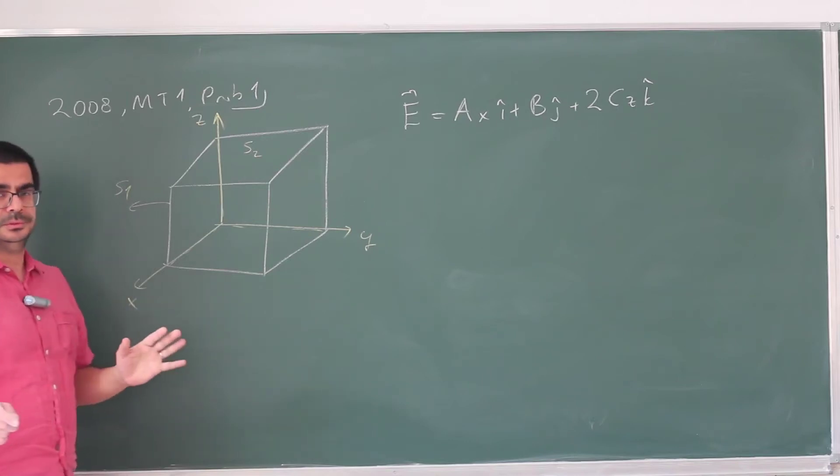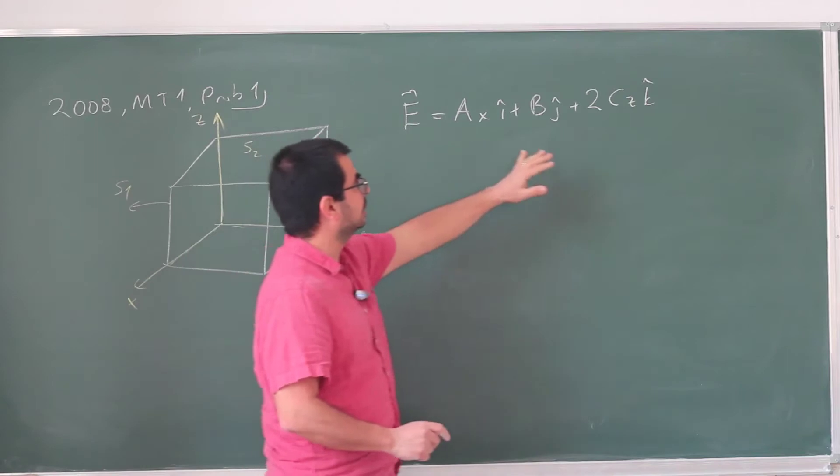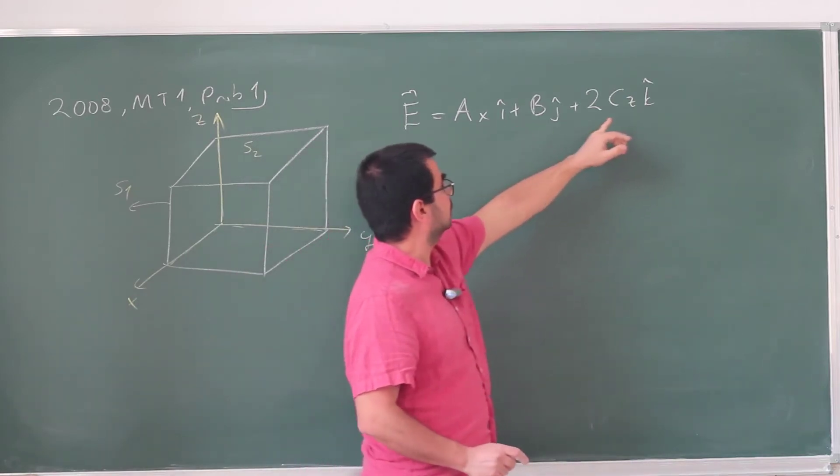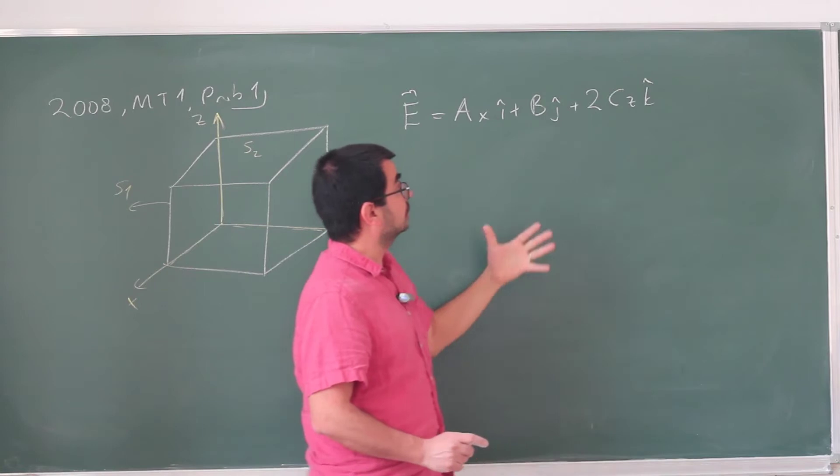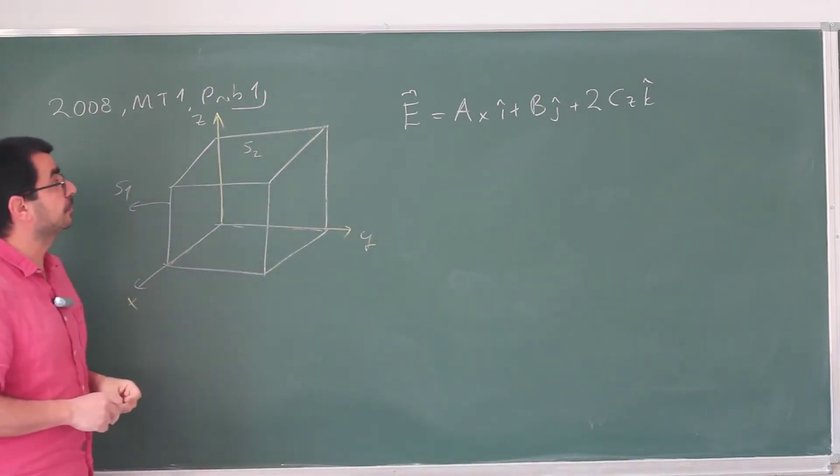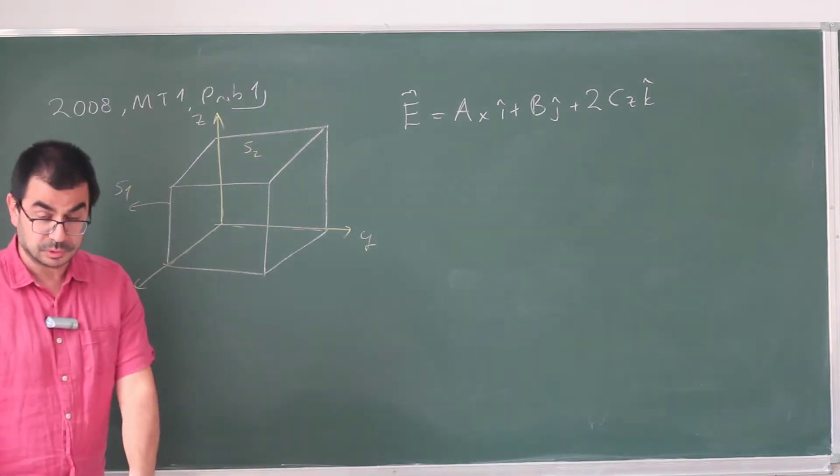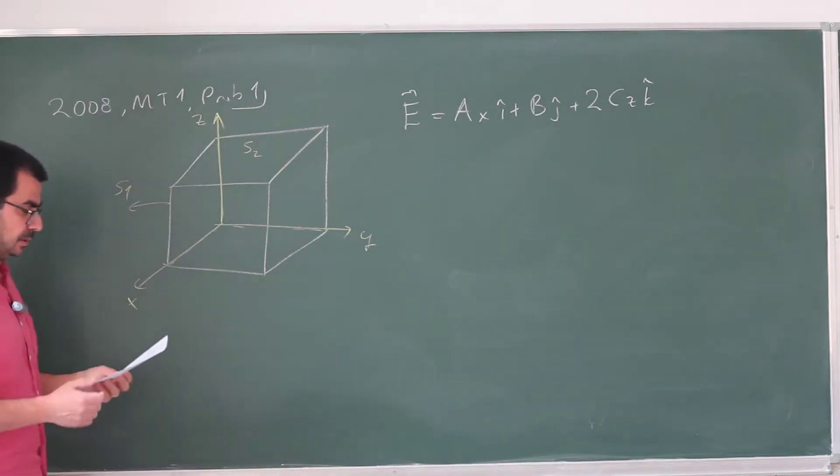So first thing to notice here is to be careful. You need to understand what they're writing. It's very easy not to see these x's and z or the 2 here. You have to be careful and make sure you read the question correctly. It's very easy to read what you think is there rather than what is actually there.